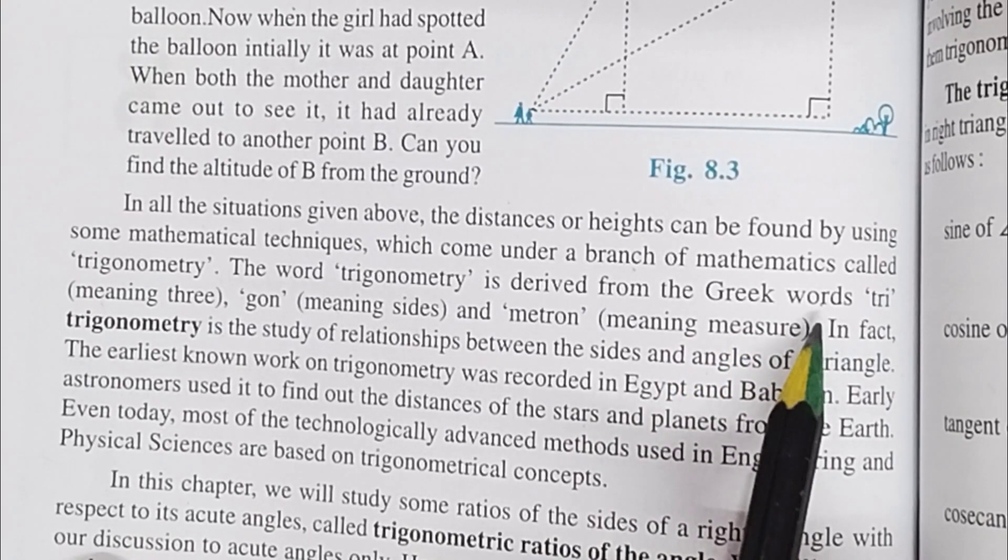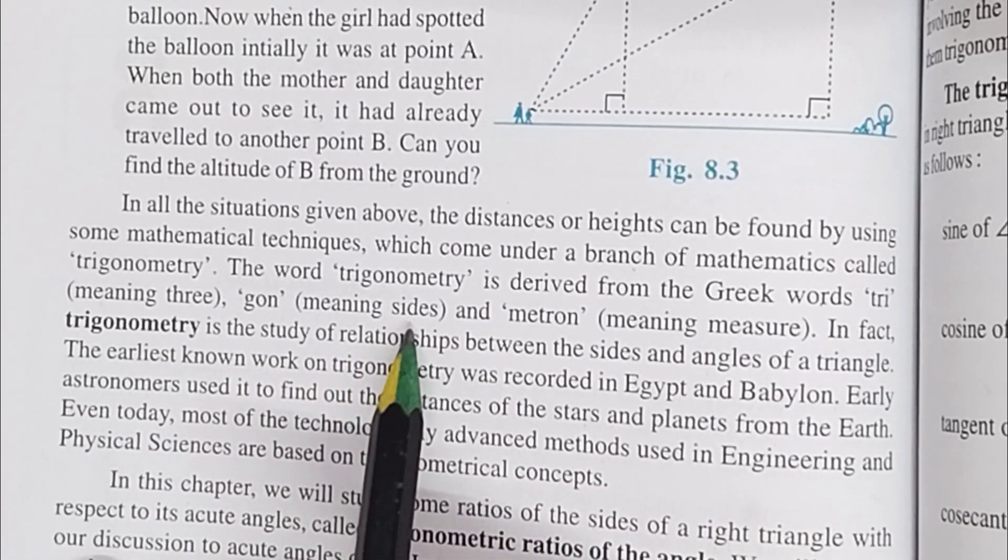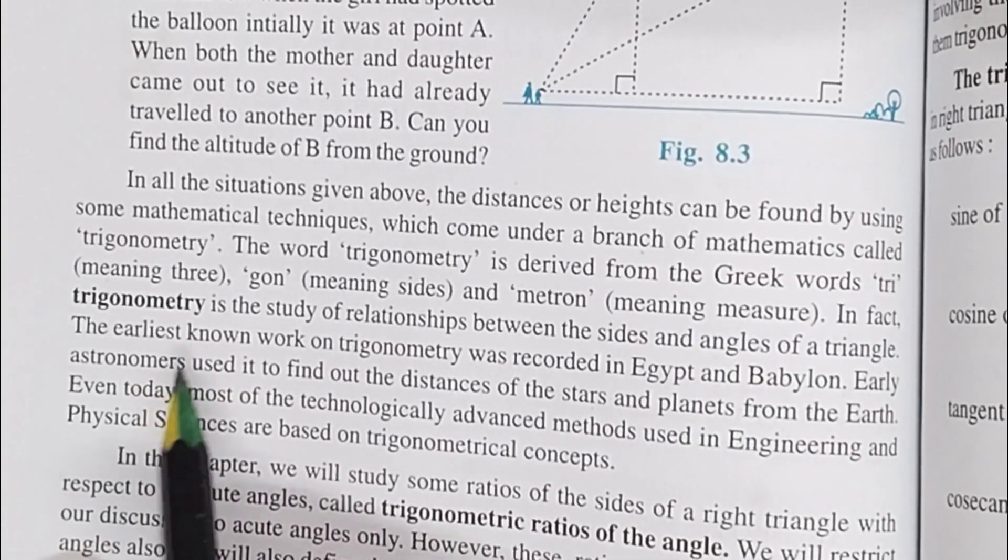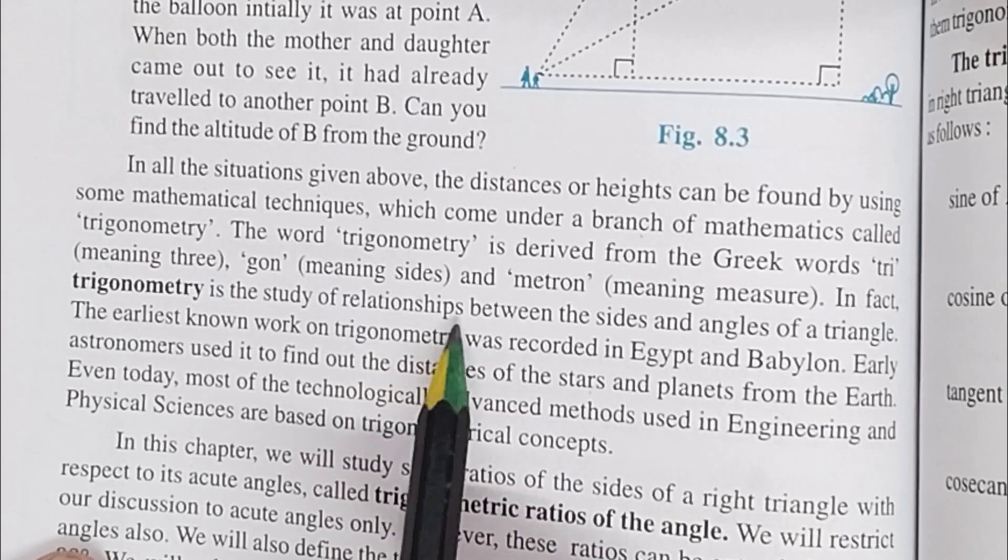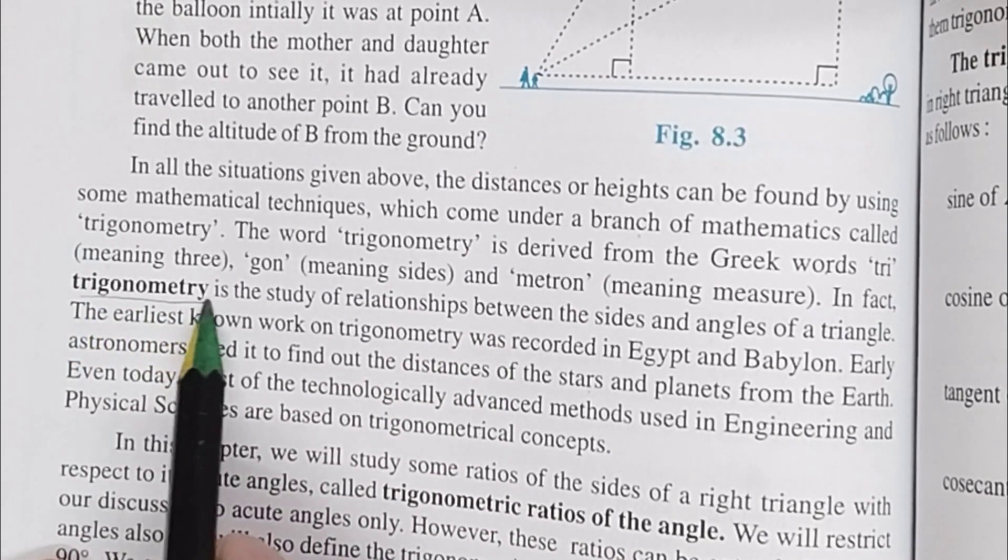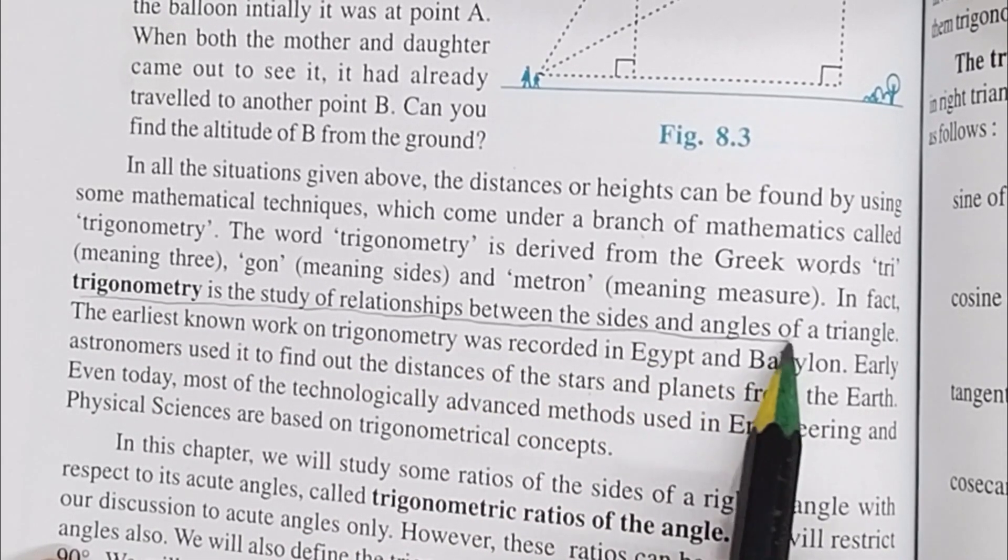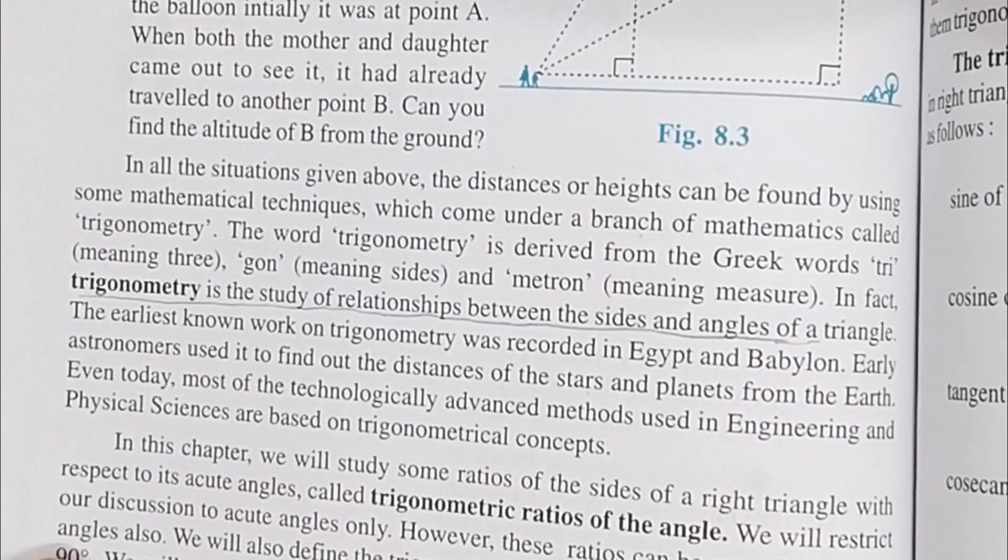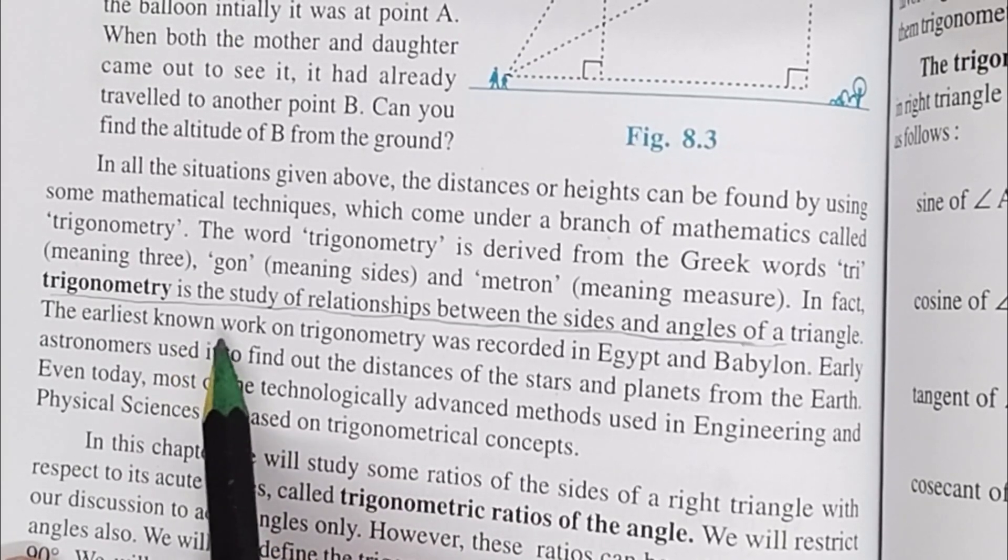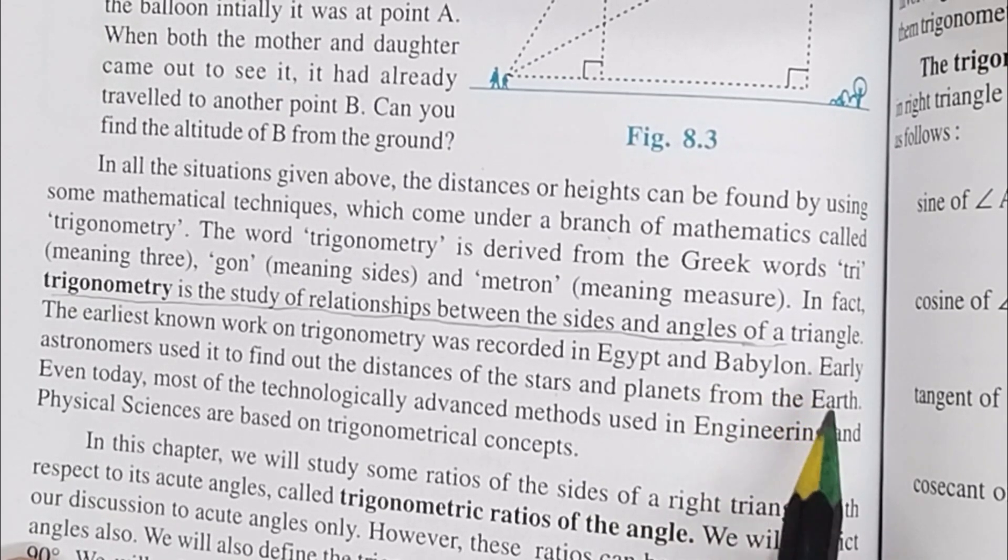Now what do we do? Try means three, gon means sides, and metron means measure. So this is the proper definition of trigonometry. Trigonometry is the study of relationship between the sides and angles of a triangle. If anyone asks you what do you know about trigonometry, you will say trigonometry is the study of relationship between the sides and angles of the triangle.